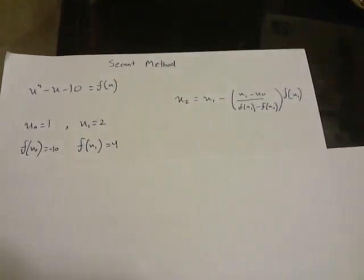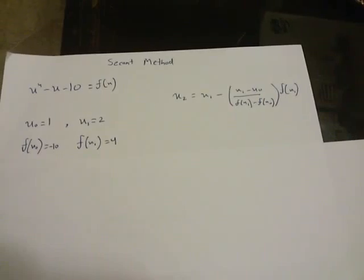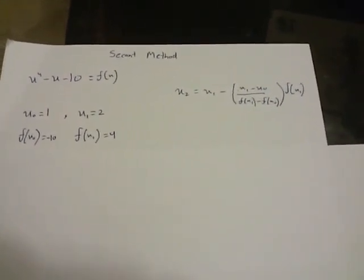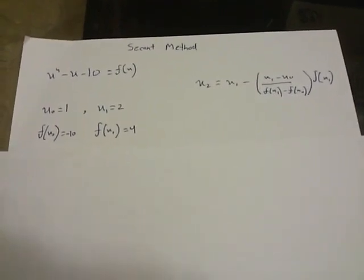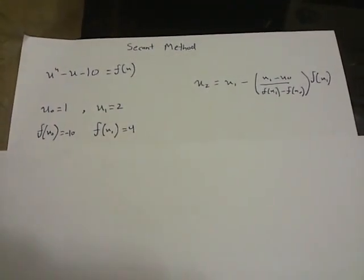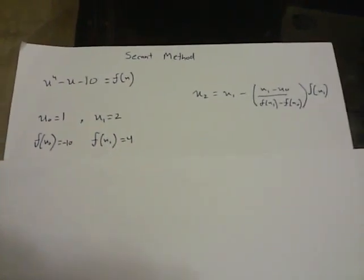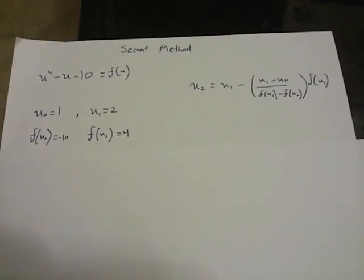First of all, in the secant method we make two approximations x0 and x1. These are values that we're supposed to guess, so I guess them to be 1 and 2. An important thing about the secant method is that these values have to be sufficiently close to each other, so be very careful about that.